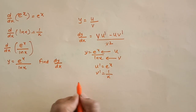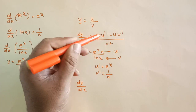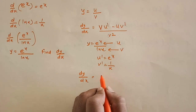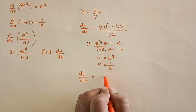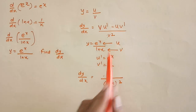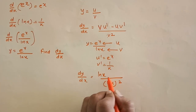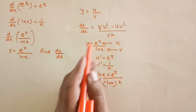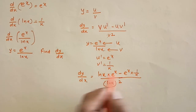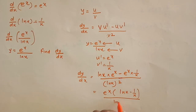Now apply the formula. dy/dx equals: first, v squared — that's ln x the whole square — in the denominator. In the numerator: v as it is, which is ln x, times u dash, which is e to the power x, minus u as it is, which is e to the power x, times v dash, which is 1 over x. The final answer becomes: e to the power x times ln x minus 1 over x, all over ln x the whole square.